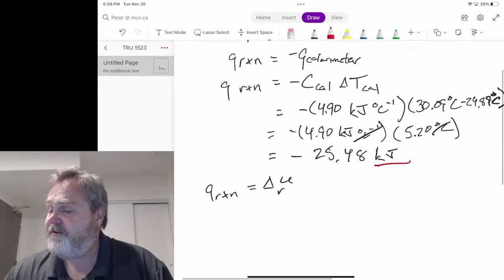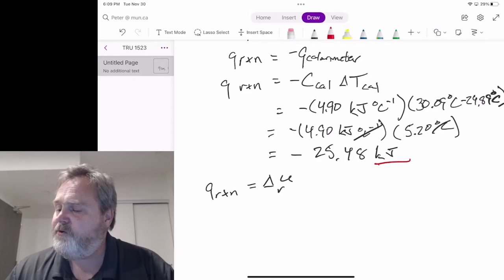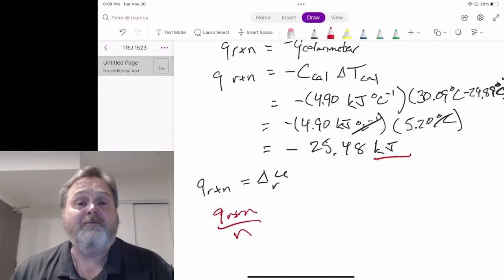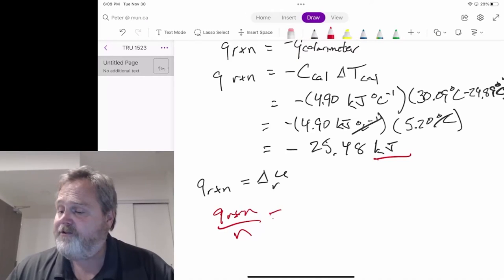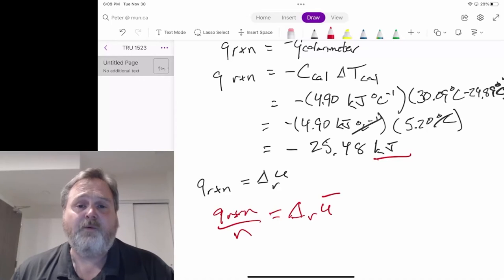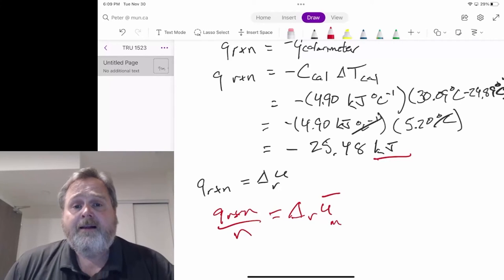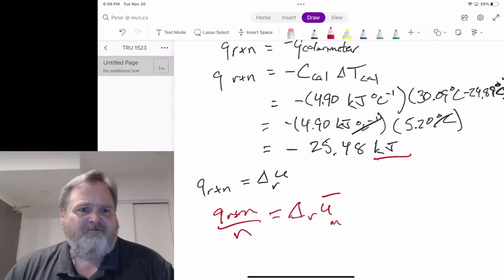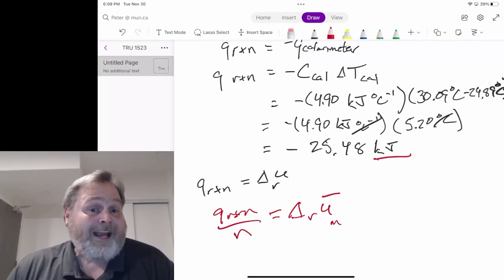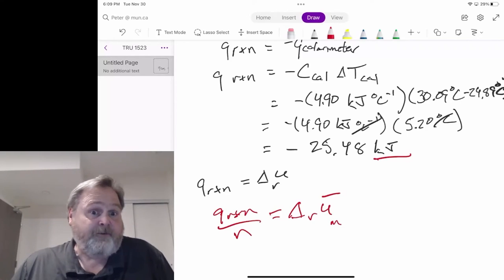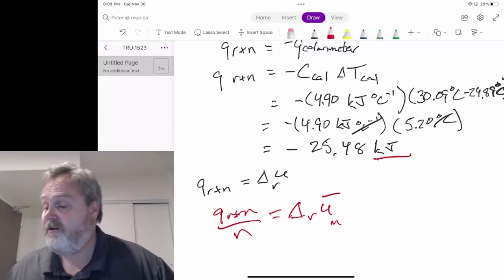If we want to turn this into a molar amount, what we're going to have to do is take Q reaction and divide it by the number of moles we actually burned. That's going to give us what we call the molar internal enthalpy change, which is symbolized often with a bar over the top, or you might see the letter M used here in subscript as well. So again, it's just really one is for the amount we had, one is for this other kind of more generalized amount, which of course is a mole, which makes sense in a chemical context.